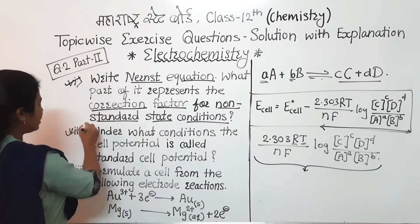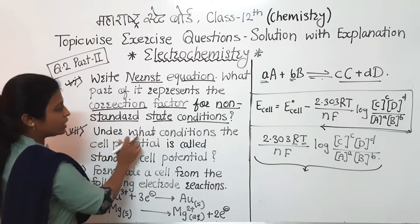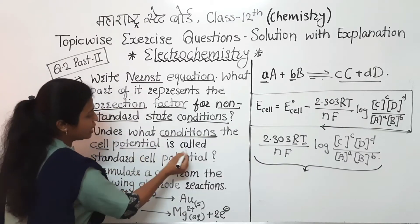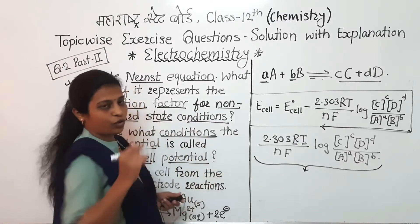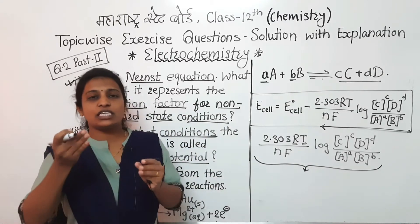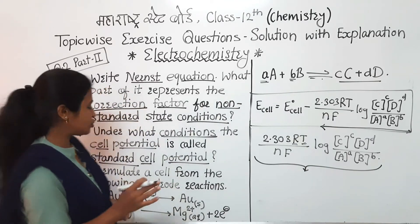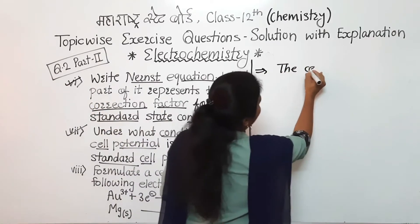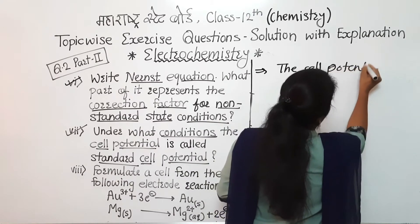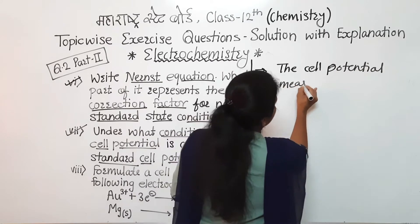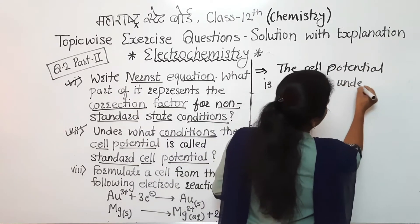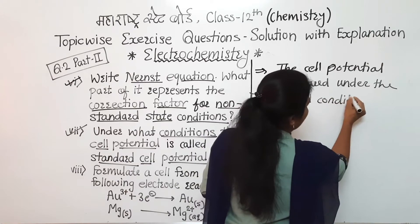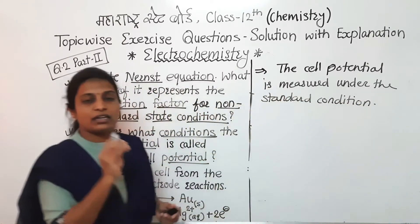We have completed the sixth question. Now we move to the seventh question: under what conditions is the cell potential called the standard cell potential? When the cell potential is measured under standard conditions, it is called the standard cell potential.